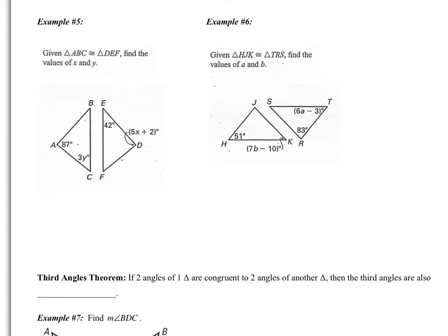In example five it says, given that triangle ABC is congruent to DEF, find the values of X and Y. Starting with X, I notice that X is angle D. Looking at my congruency statement, angle D should be congruent to angle A, which is 87. So I have 87 equals 5X plus 2. Subtracting 2, I get 85 equals 5X. And then X equals 17.